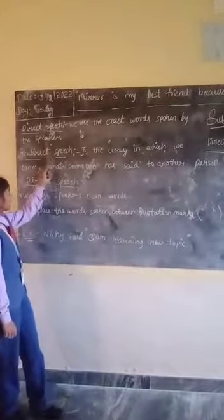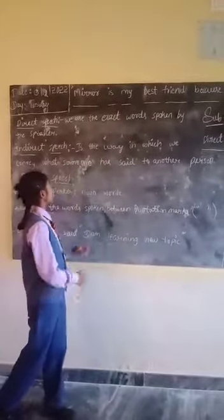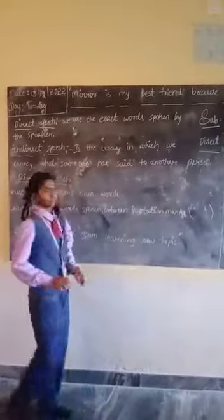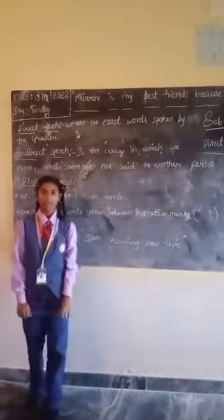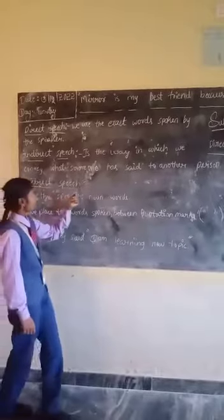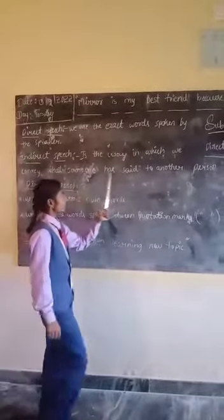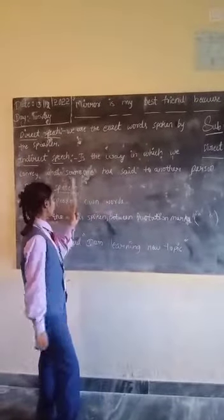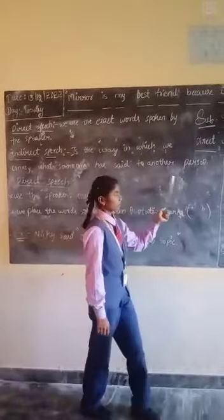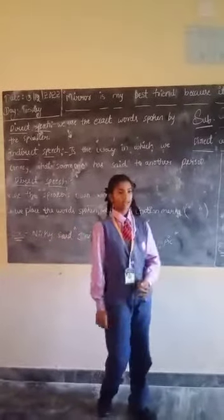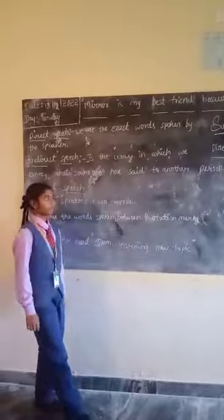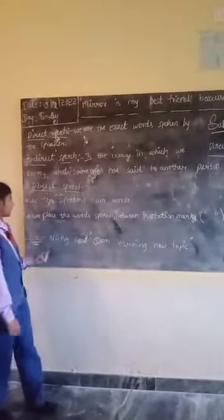First of all, direct speech. In direct speech, we use the exact words spoken by the speaker. Direct speech is the way in which we convey what someone has said to another person — what someone says to me, I am conveying to another person. It is called direct speech.